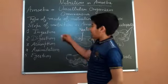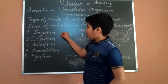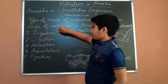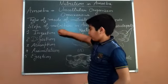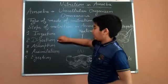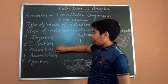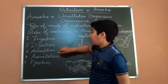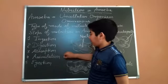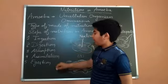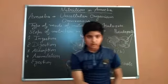There are five steps of nutrition. First, ingestion. Second, digestion. Third, absorption. Fourth, assimilation. And the fifth one is ejection.